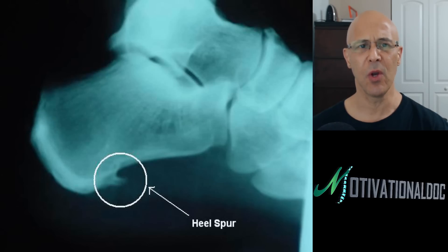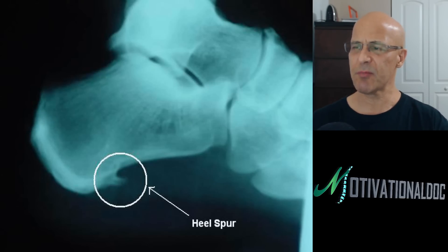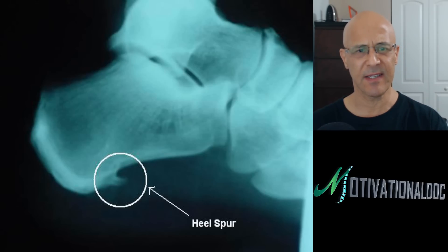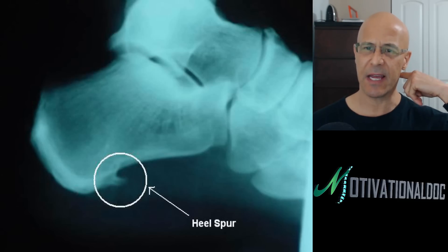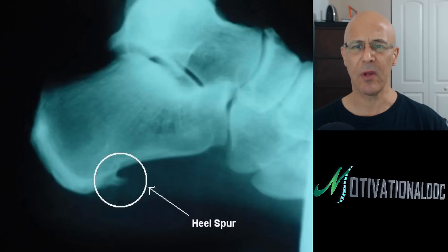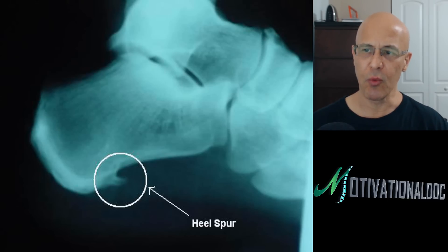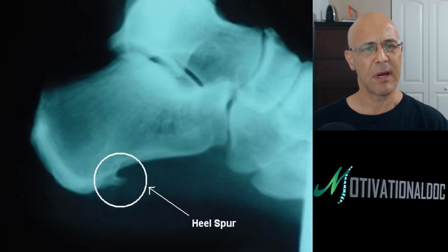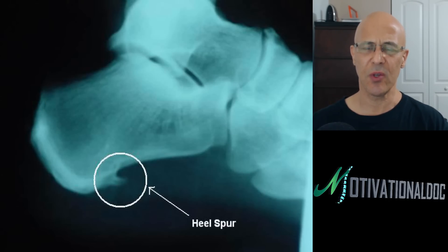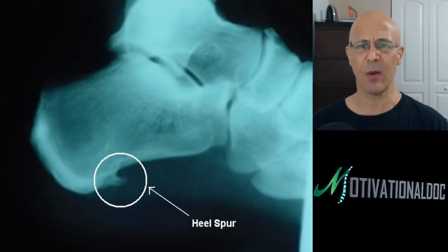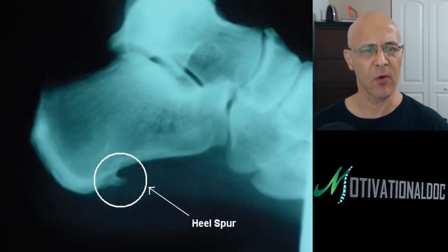Many of us have bone spurs and don't even know it. How do we get these things? The bone spur is generally called an osteophyte. An osteophyte is a tiny pointed outgrowth in the bone, and this can occur in all joints of the body. It can happen in the neck, elbow, the hip, the low back, the knees, the ankles. I'll show you some x-rays and go over some different bone spurs. I'll tell you a little bit how they're caused and what we can do to try to combat these things. These bone spurs generally occur when there's inflammation, meaning there's stress in the joint.